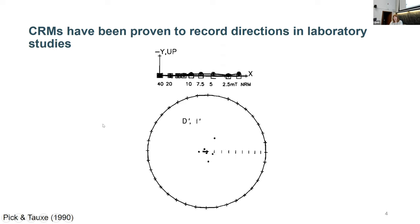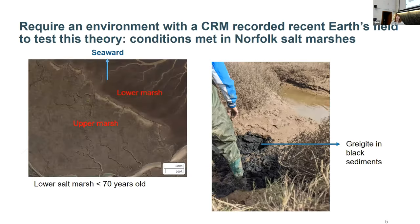Although it hasn't been proven in nature, it has been proven in the lab using a range of different minerals - for example, for hematite and for magnetite. This is an example of a CRM recorded in magnetite where the magnetic field was applied in the x-direction, and you can see it's aligned quite well. It was an alteration CRM, altered from a non-magnetic precursor, and it still seems to record reliably. To test this theory in nature, we need to find a location where magnetic minerals have been produced authigenically at essentially the present day.